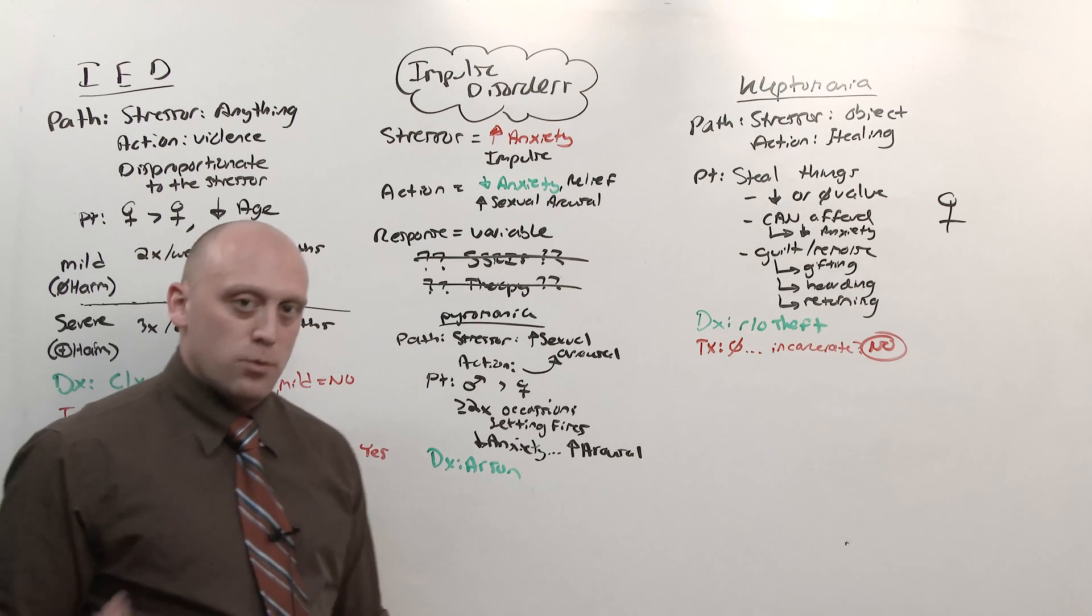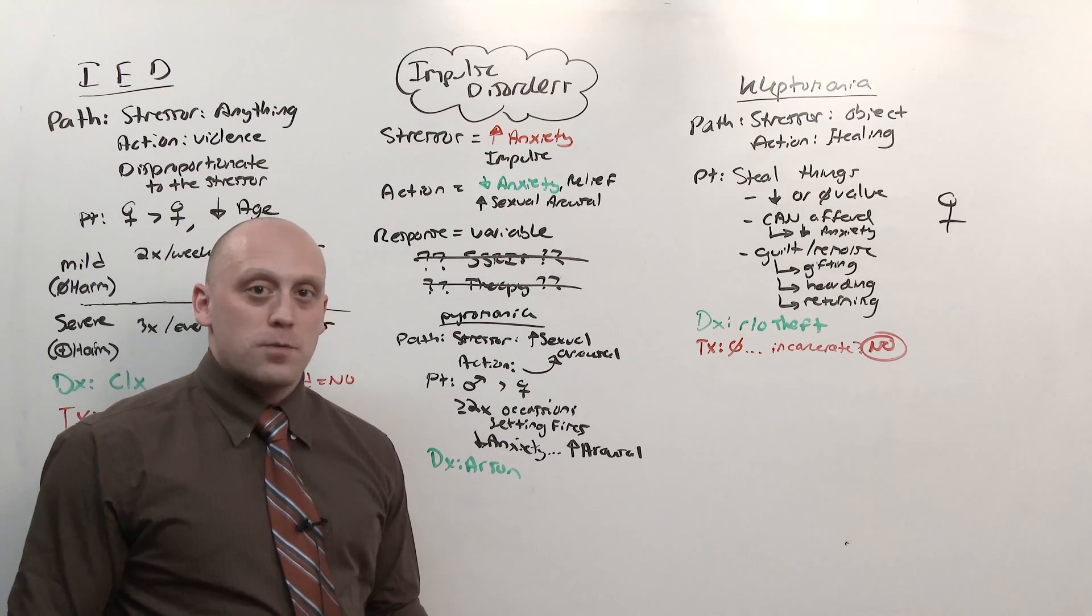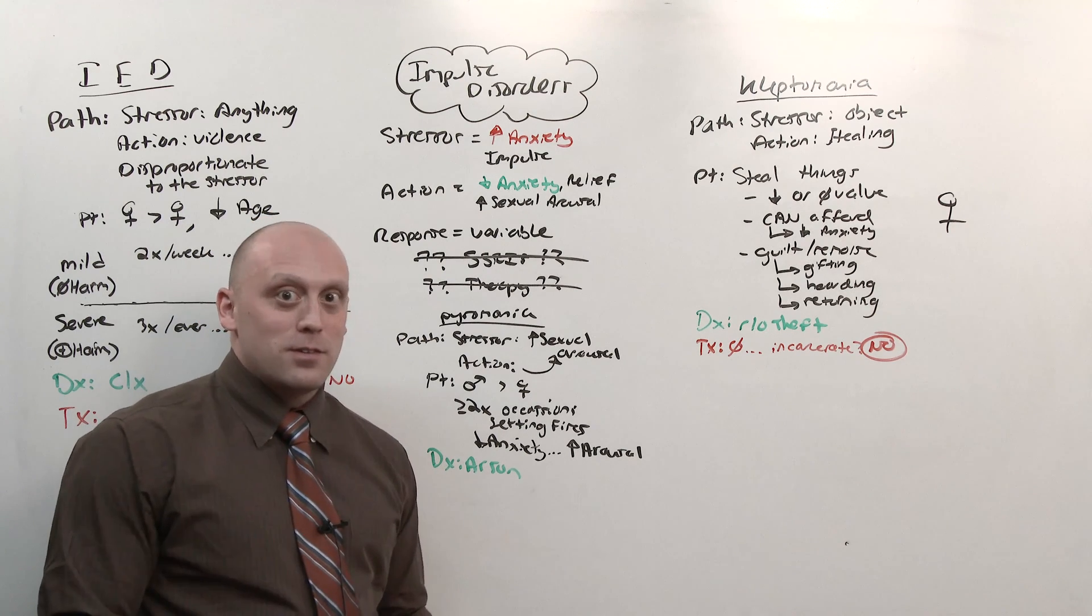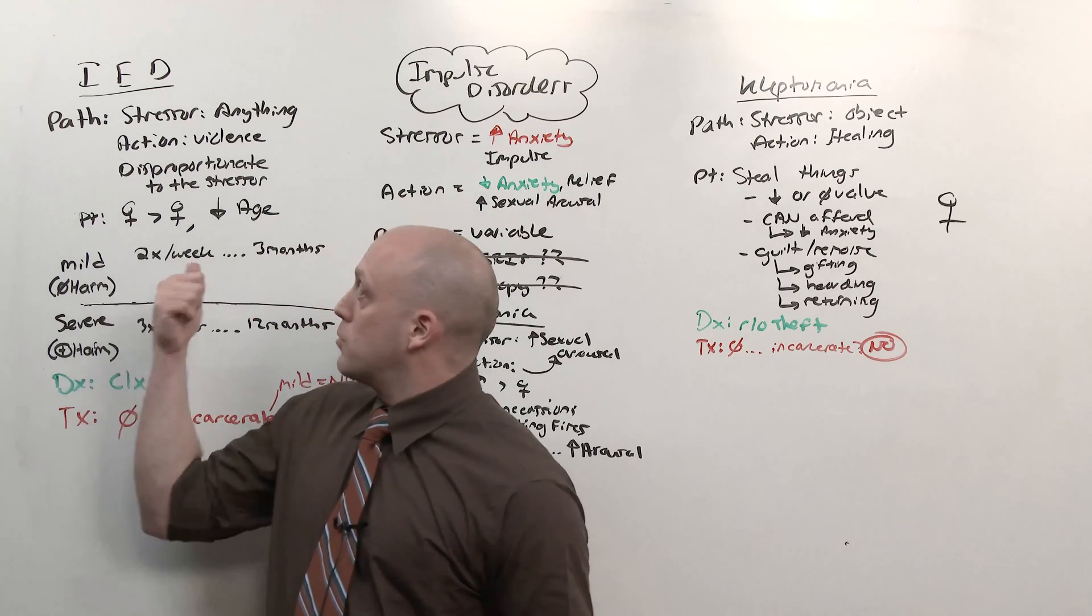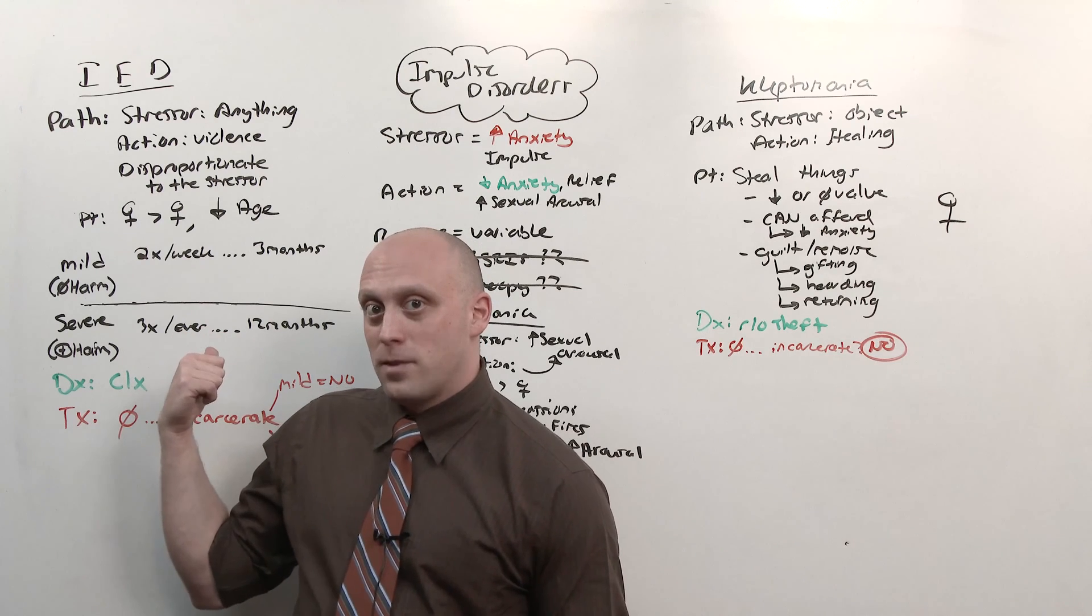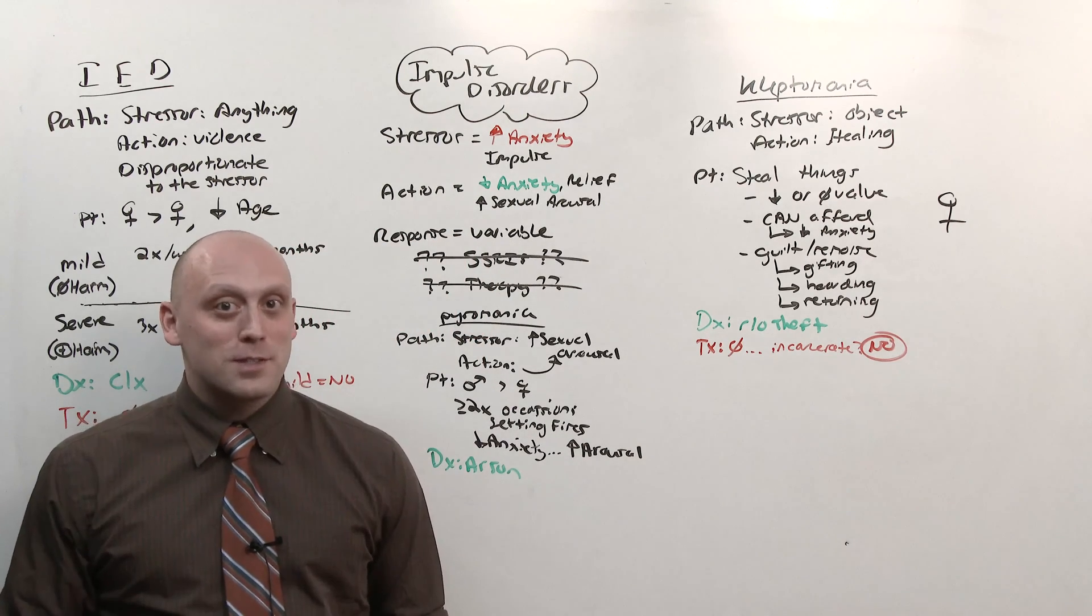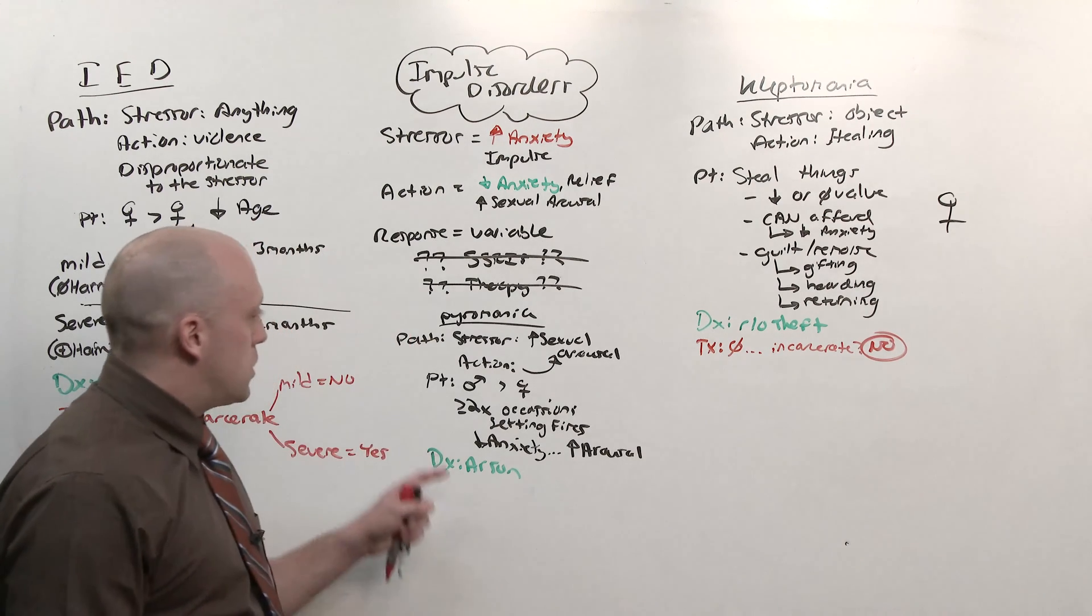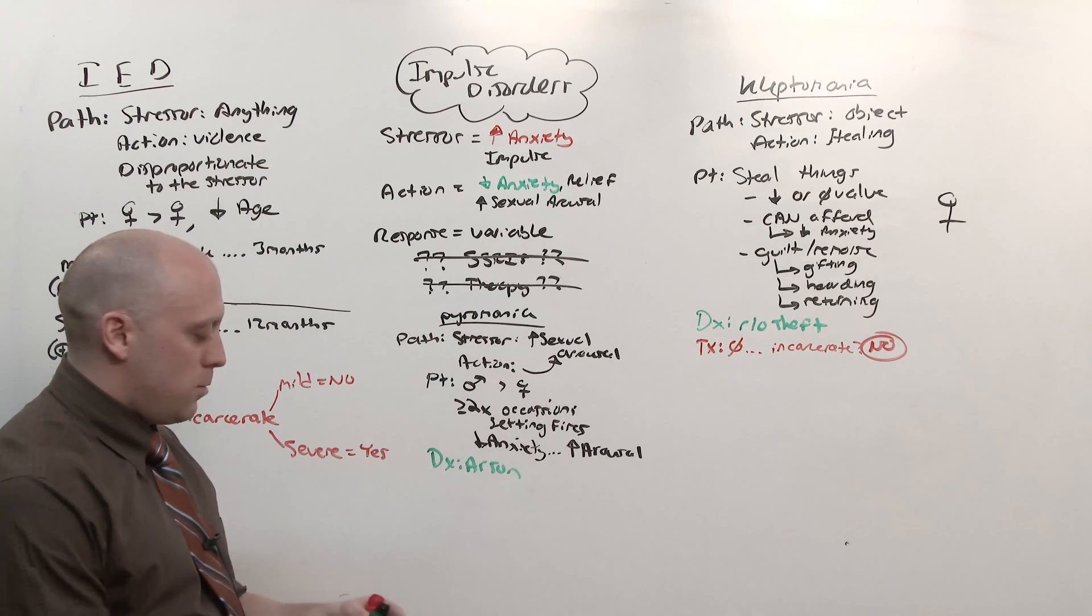Now when you catch someone lighting fires, what you need to do is decide, is this arson? And the main difference, and again we have a table in the notes, is the motivation. If someone is setting fire to something because they want to kill somebody, that's arson, attempted murder. If they're setting fire to something because they're having a disproportionate reaction to a stressor, that's intermittent explosive disorder. If they're setting fire to collect insurance, that's malingering or fraud. The person who sets fires because they like it, that person's a pyromaniac.